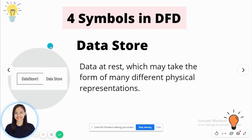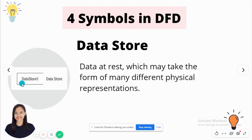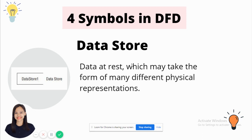Next is the data store. This is the symbol of the data store according to Gani and Sarzon. It has a line, and the name of the data store is placed there. Data store is a data repository which may take the form of many different physical representations. Simply, this is your database table.